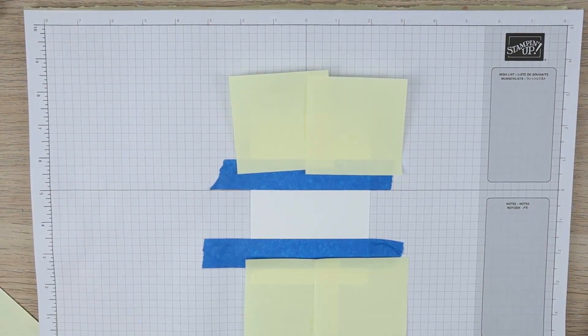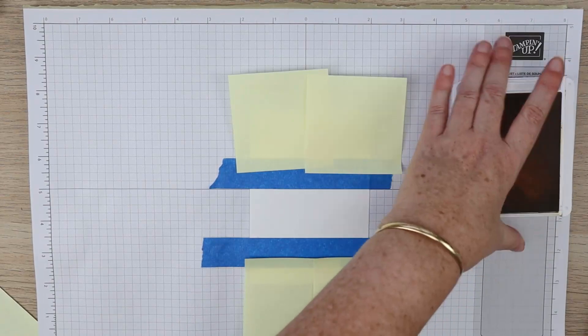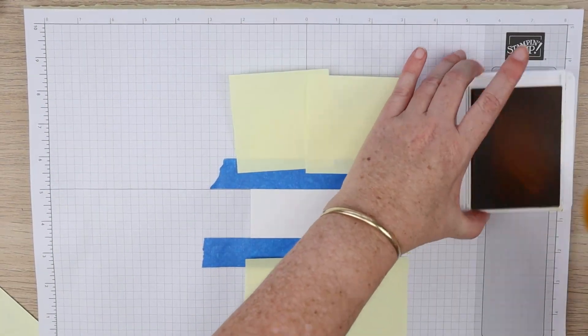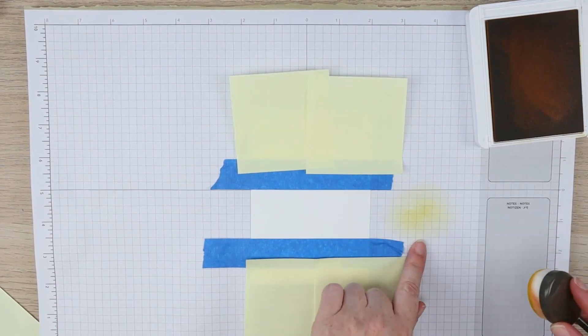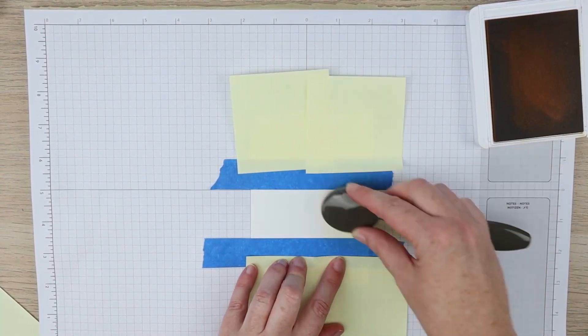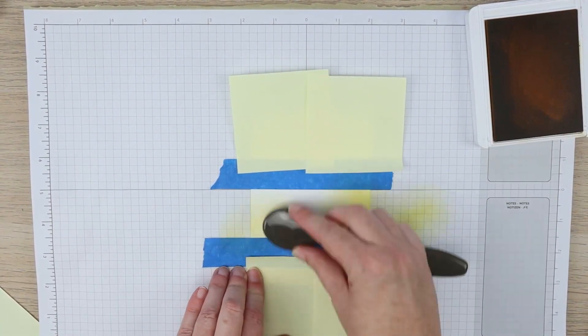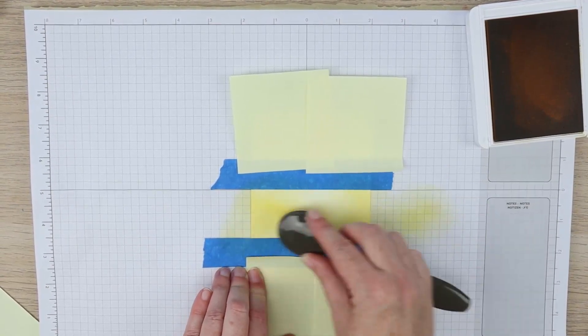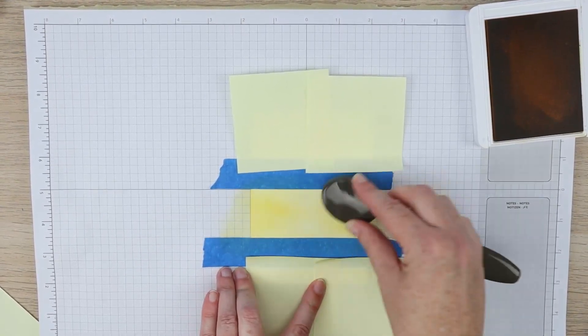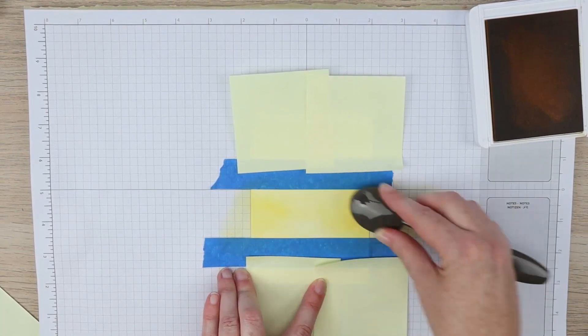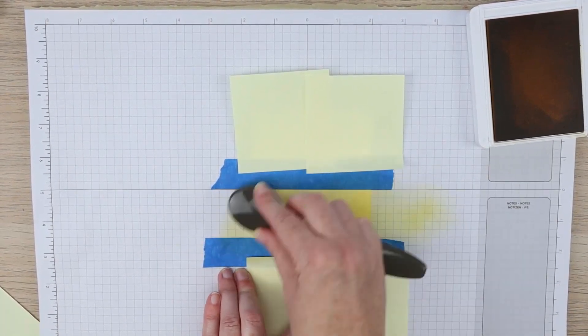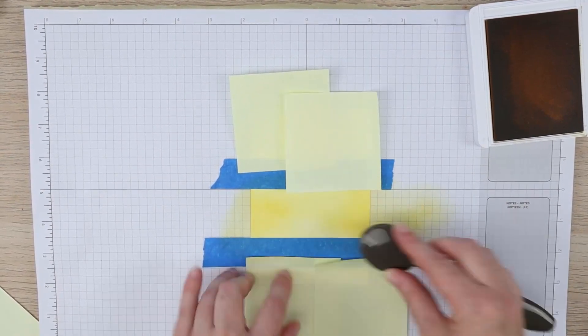First off I'm going to start with my lightest color which happens to be crushed curry. I'm going to ink it up. I'm going to start blending off my cardstock first and then onto the cardstock. I'm going to have it nice and heavy on the outside and gradually blending out into the center there. You want to go in circular motions to get that nice smooth blend.